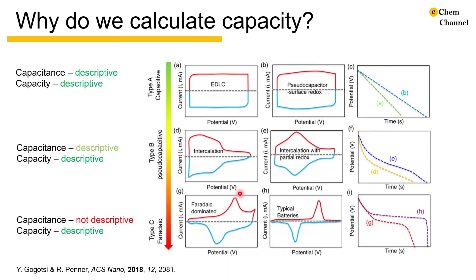In the last tutorial, we discussed capacitance, a very important metric to describe charge storage behavior in electrical double-layer capacitors and pseudocapacitors. Such electrochemical behaviors are described in type A and type B in this panel. When more faradaic reactions, especially with more phase transformations, are involved, the derivative of charge with respect to potential deviates away from linear or pseudo-linear behavior. This is when capacitance is no longer descriptive to represent the charge storage behavior in such materials, and where capacity should be used instead.